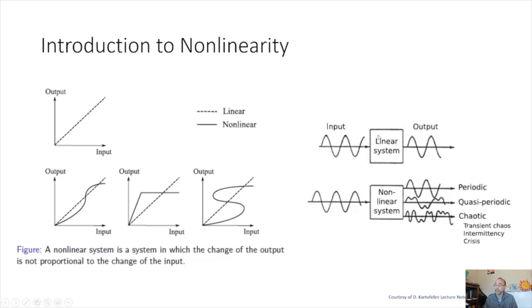A linear system, for instance, gives a very similar signal to the input here, which is sinusoidal. A nonlinear system responds differently to the sinusoidal system. It could be periodic, quasi-periodic, or even chaotic. These are for higher-order nonlinear systems.